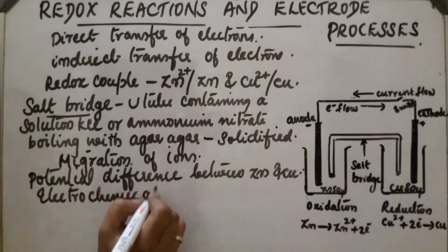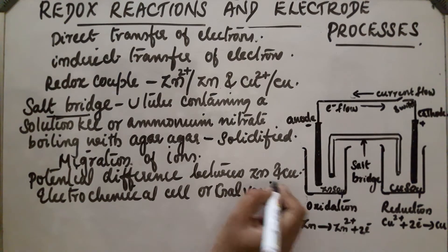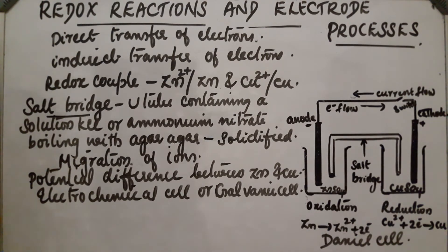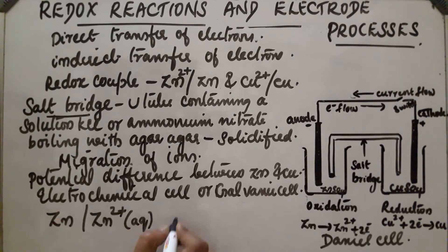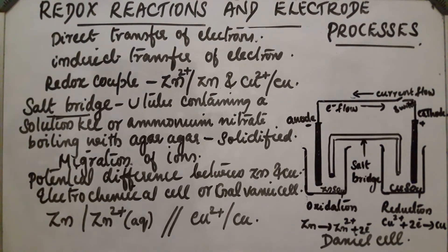This is called an electrochemical cell or galvanic cell. The zinc-copper cell is called a Daniel cell, and it can be represented as Zn | Zn²⁺ || Cu²⁺ | Cu. Here oxidation takes place at the zinc electrode and reduction takes place at the copper electrode. This is the electrode process.